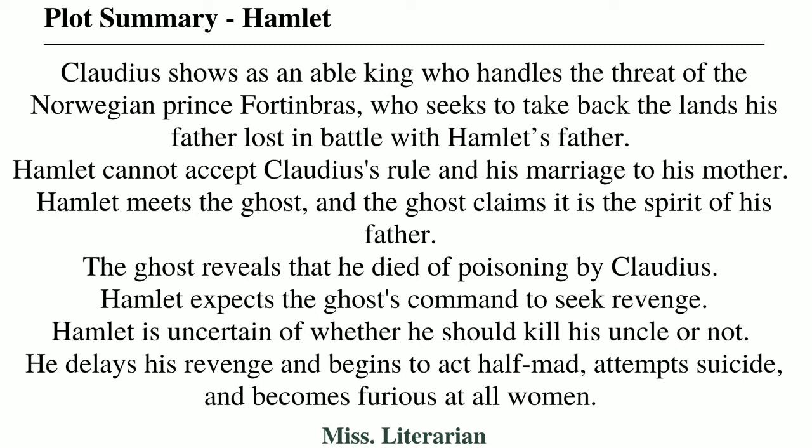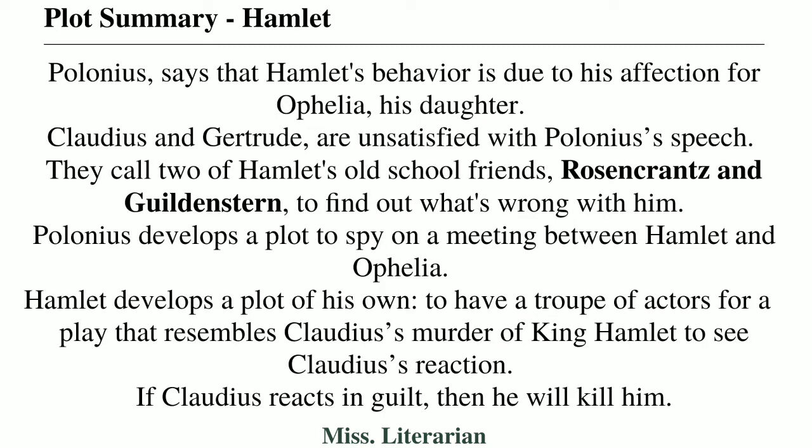As days pass by, Hamlet is uncertain and could not believe what the ghost has told him. He could not come to any good decision whether to murder his uncle Claudius. Hamlet then behaves like a half madman and tries to commit suicide, and also becomes furious at all women. Everyone gets astonished by his behavior. The king's old counsellor Polonius believes that Hamlet's behavior is due to his affection for Ophelia, his daughter. Claudius and Gertrude are unsatisfied with Polonius's assessment, and they call for Hamlet's old school friends Rosencrantz and Guildenstern to find out what's wrong with Hamlet.